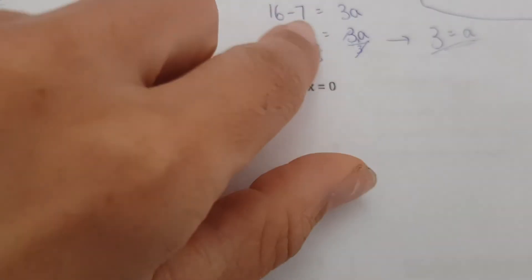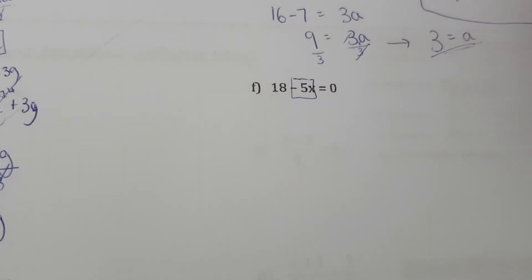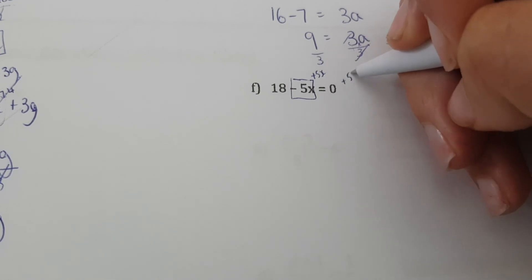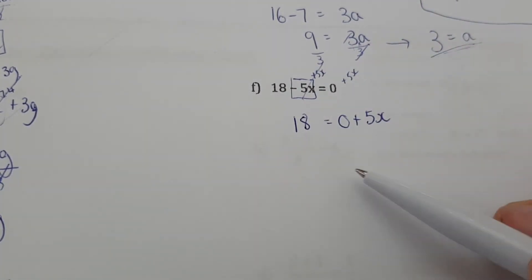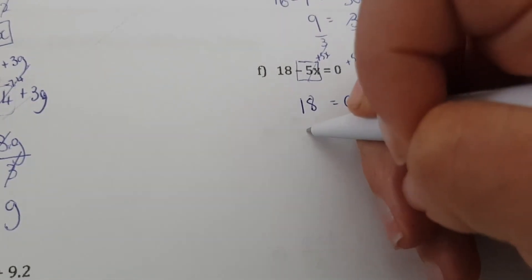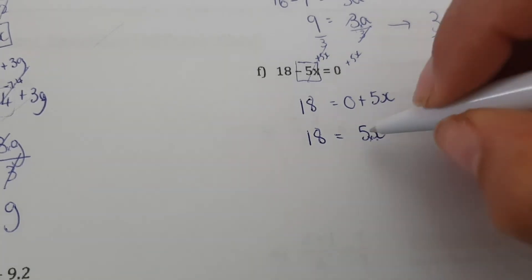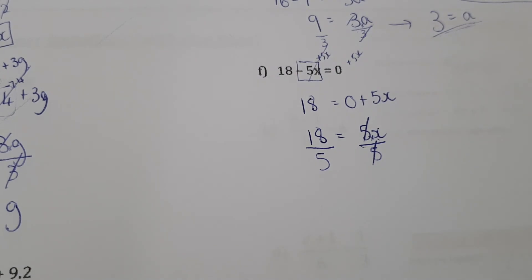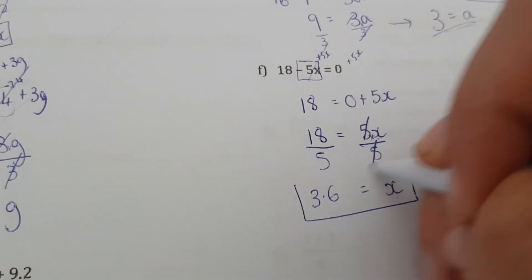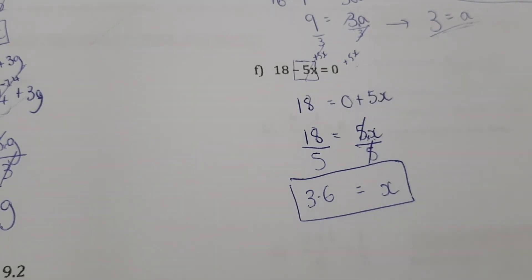Next: 18 minus 5x equals zero. Move the negative 5x to the other side by adding 5x to both sides — it is eliminated, leaving 18 on the left and 0 plus 5x equals 5x on the right. Eliminate the 5 by dividing both sides by five: 18 divided by 5 is 3.6. You can check: 3.6 times 5 minus that value should give zero.